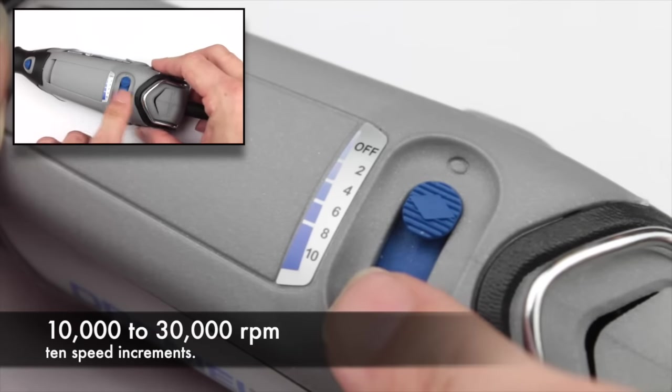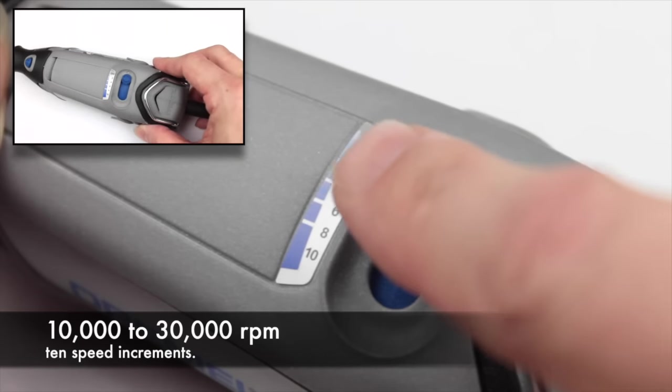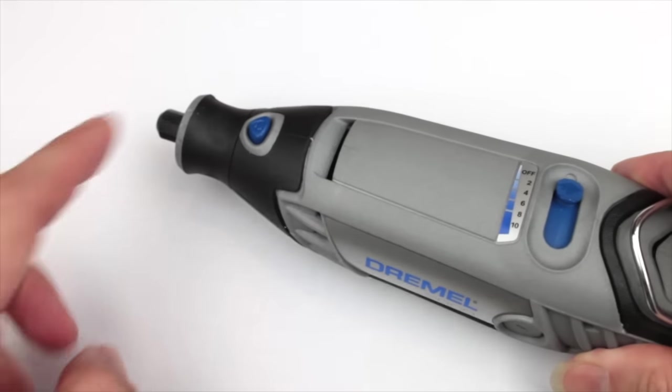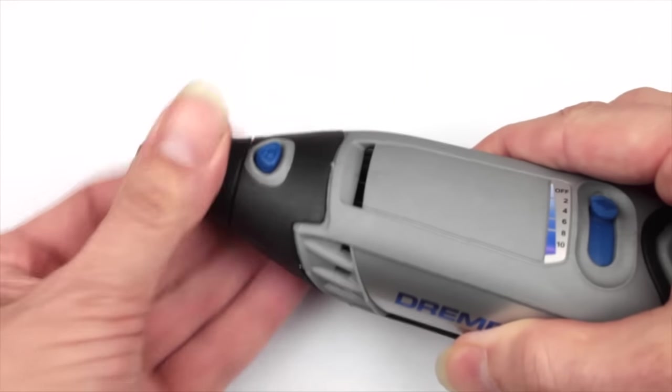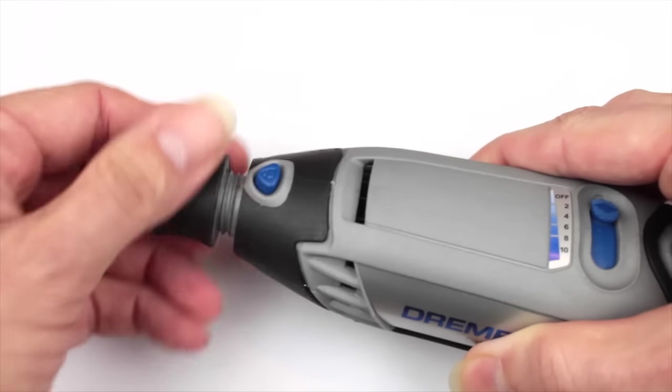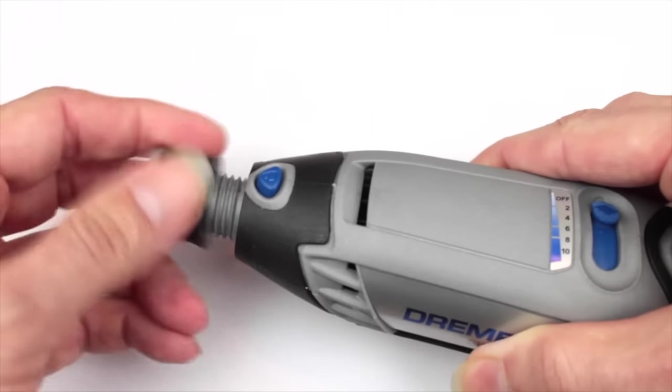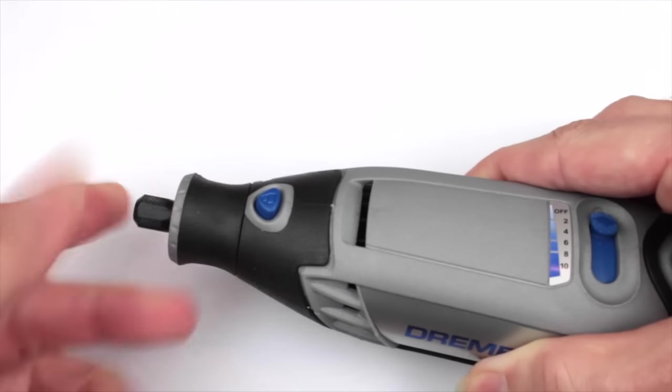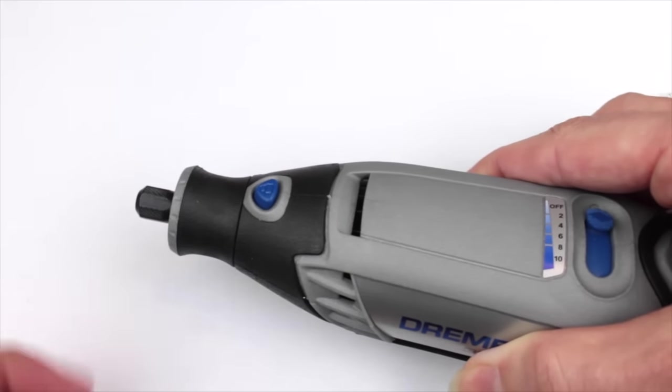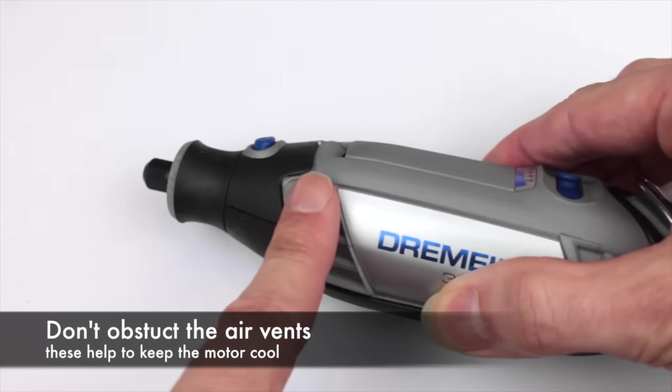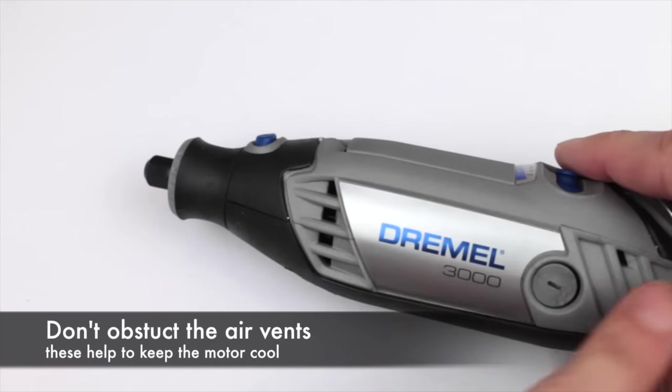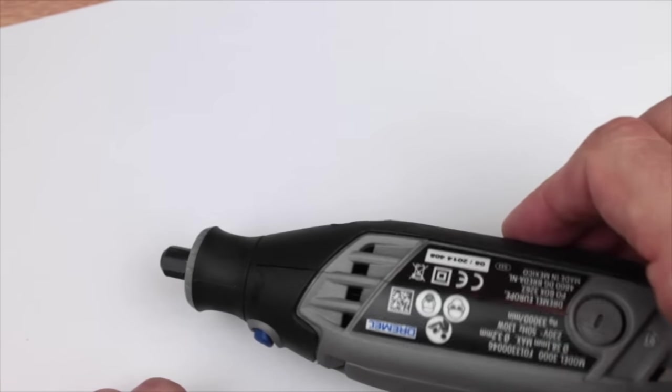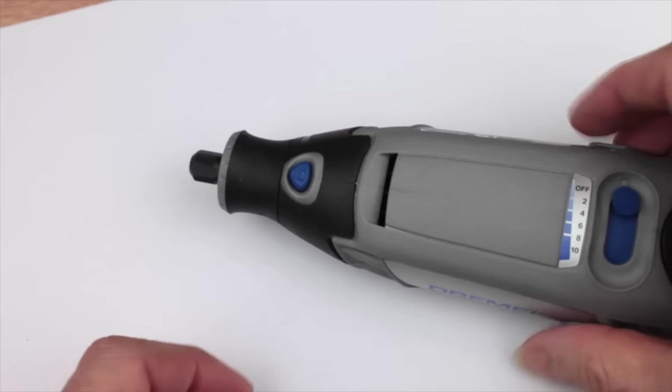We have the variable speed control here at the front. You have the spindle lock. This is the screw cap, this unscrews and you can use this threaded connector at the end here for attaching different accessories. Right at the end there we've got the chuck, and another thing to point out is at the side here you've got various vents both at the back and front. This is to keep the unit cool.